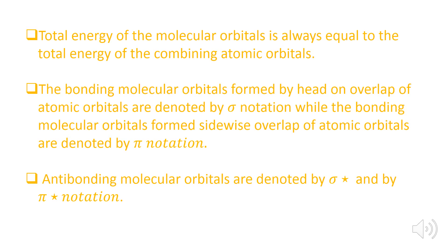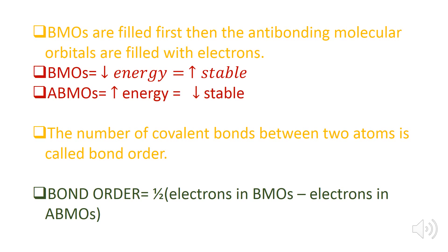The total energy of the molecular orbitals is always equal to the total energy of the combining atomic orbitals. Bonding molecular orbitals formed by head-on overlap are denoted by sigma notation, while those formed by sidewise overlap are denoted by pi notation. Anti-bonding molecular orbitals are denoted by sigma star and pi star notation. Bonding molecular orbitals are filled first, then anti-bonding molecular orbitals, according to the Aufbau principle.